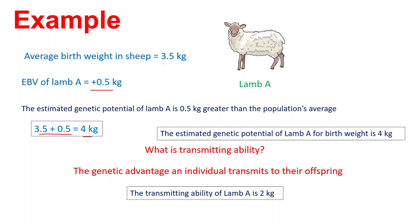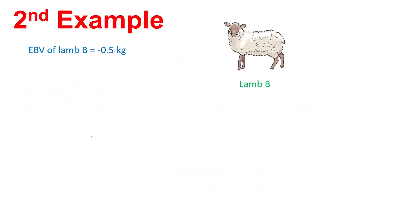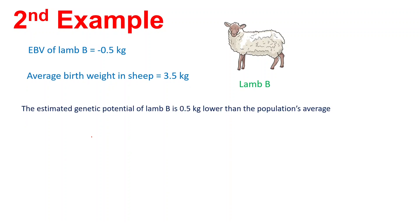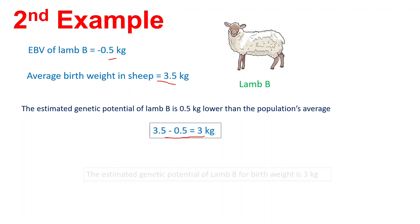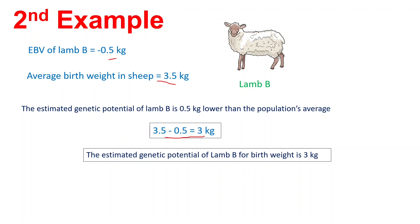Consider lamb B, whose EBV is negative 0.5 for birth weight. It means the estimated genetic potential of this lamb is 0.5 kg lower than the population average. As the population average was 3.5 and the EBV of lamb B was negative 0.5, so 3.5 minus 0.5 equals 3 kg. So, 3 kg is the estimated genetic potential of lamb B for birth weight, half of which is the transmitting ability, which is 1.5 kg.